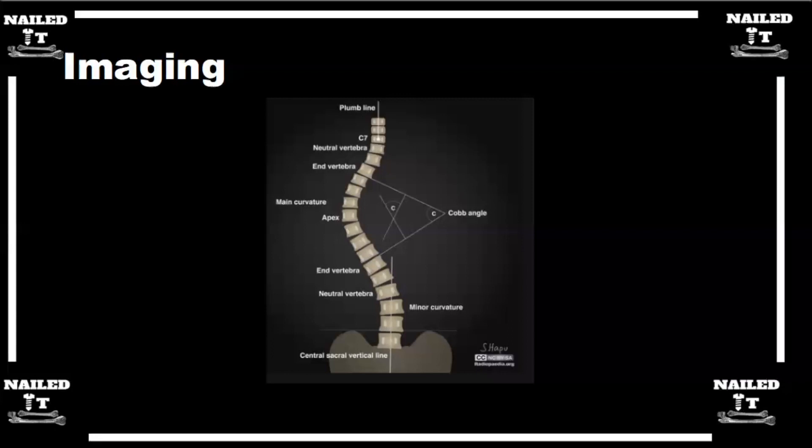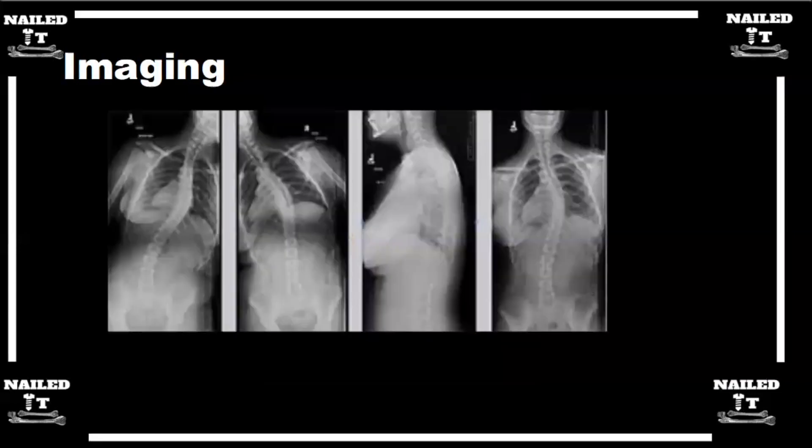Do you measure these after you get the bending film? You see what's flexible. We can talk about bending films, when to get them, and then what we should do with those. Most kids that come to my office with scoliosis do not get bending films. Most kids get a standing PA and lateral radiograph of the thoracolumbar spine.